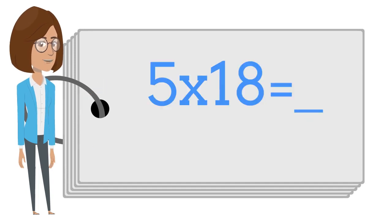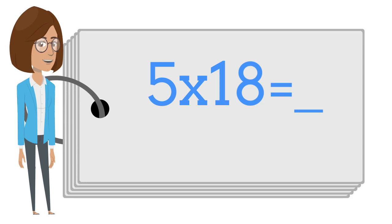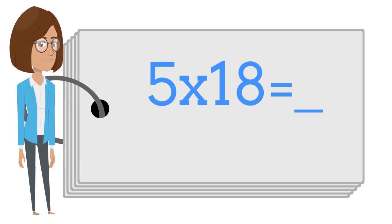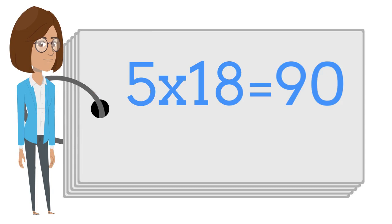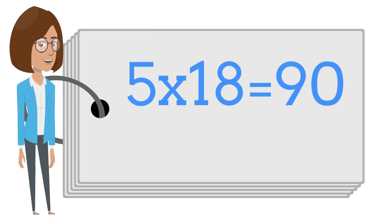Five times eighteen is? Say your answer out loud. Five times eighteen is ninety.